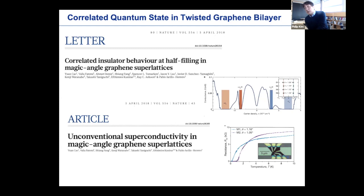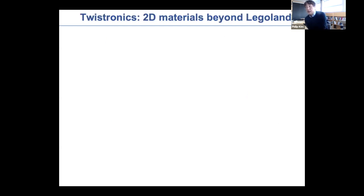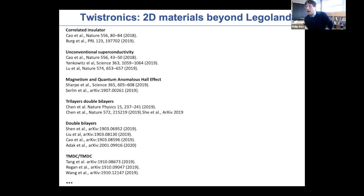Within about two and a half years, the field has been really expanding rapidly. In twisted bilayer graphene alone — the magic angle twisted bilayer — not only correlated insulators but superconductors, magnetism, and quantum anomalous Hall effect have been seen. People quickly searched beyond twisted bilayer, for example the trilayer system, where flat bands appear either aligned or not aligned with boron nitride. This trilayer system also shows correlated insulating behavior, superconducting behavior, as well as quantum anomalous Hall type behavior.